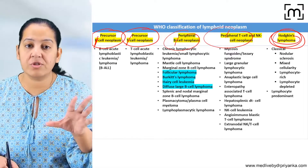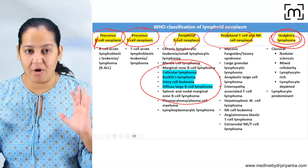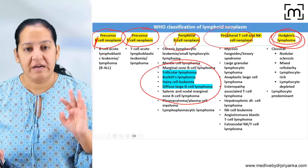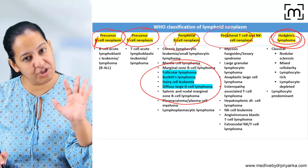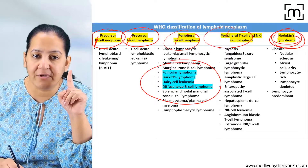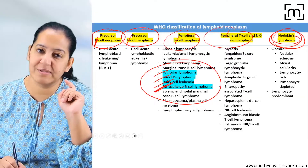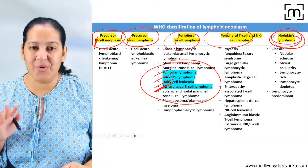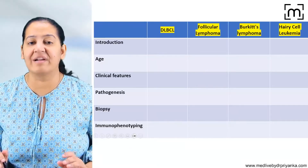Among all categories, the most common lymphomas fall in the Peripheral B Cell category. We will not discuss all lymphomas, but will focus on the four most important ones in your syllabus — the ones examiners ask questions about: Follicular Lymphoma, Burkitt Lymphoma, Hairy Cell Leukemia/Lymphoma, and Diffuse Large B Cell Lymphoma (DLBCL). These four fall within the Peripheral B Cell neoplasm category.